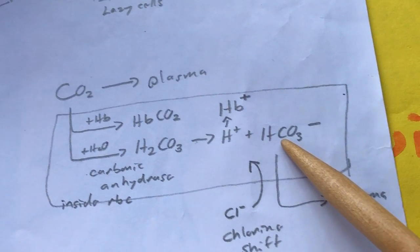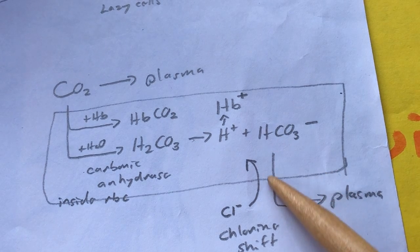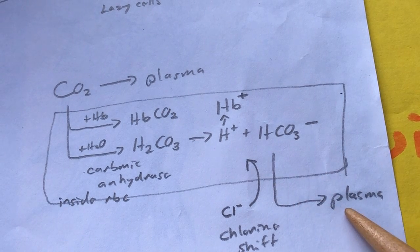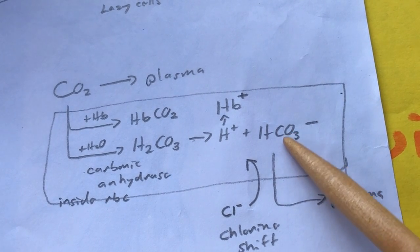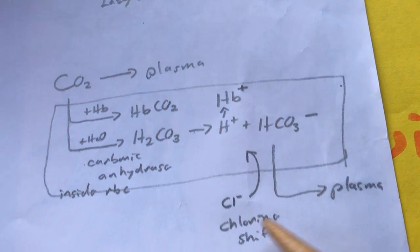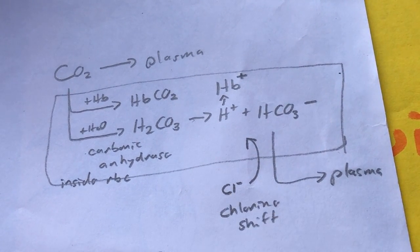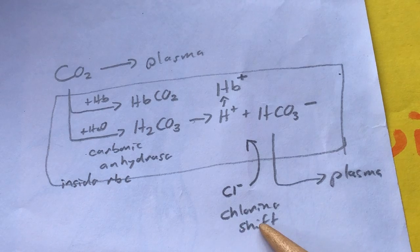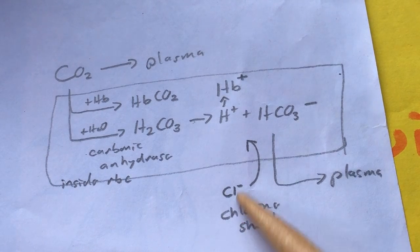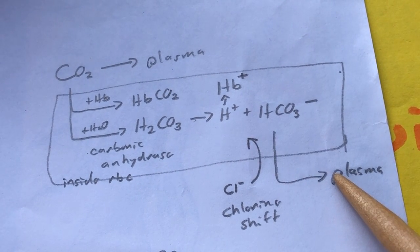The bicarbonate will not stay inside the red blood cell. Instead it leaves the red blood cell and becomes part of the plasma. But when this negative charge shifts outward, a negative charge shifts inward — and that's chloride. This is called the chloride shift: chloride moves in as bicarbonate moves out.